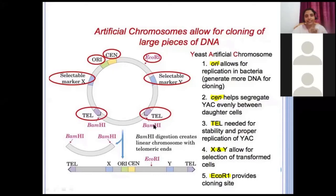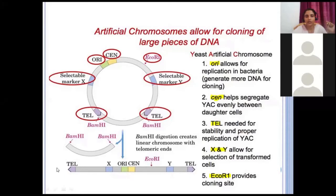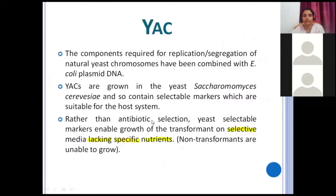You have a circular YAC, and after cloning it becomes a linear YAC. BamH1 will cut at two sites, giving you telomeric ends so it becomes a straight or linear YAC. BamH1 digestion creates a linear chromosome with telomeric ends — the telomere helps in proper replication of YAC. This BamH1 portion is removed and cut. The components required for replication or segregation of natural yeast chromosomes have been combined with E. coli plasmid DNA — confirming it is a hybrid.